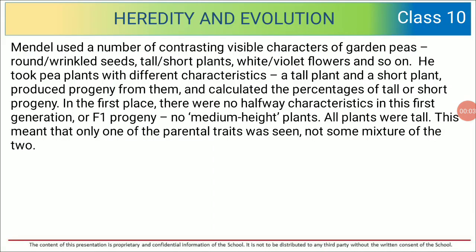Mendel used a number of contrasting visible characters of garden peas. In today's class we are going to discuss Mendel's experiment. He took round and wrinkled seeds, tall and short plants, white and violet flowers and so on. He took pea plants with different characteristics — a tall plant and a short plant — produced progeny from them, and calculated the percentages of tall and short progeny. So he crossed the two pea plants with different characteristics.